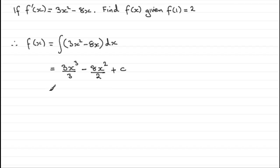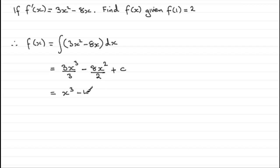Let's tidy this up. The 3's cancel here and we get x cubed, and in the next term we're going to have minus 8 divided by 2, which is minus 4x squared, and then plus c.